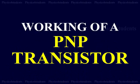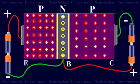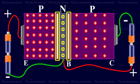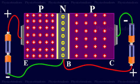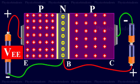A PNP transistor is like two PN junction diodes placed back to back. At each junction there is a depletion region which gives rise to a potential barrier. The external biasing of the junctions is provided by the batteries VEE and VCC, as shown in the animation.